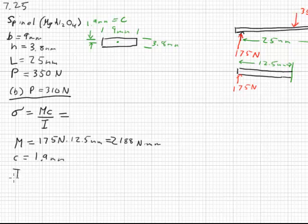We already calculated C, that is 1.9 millimeters. For moment of inertia, it's base times the cube of its height all divided by 12. Base is 9 millimeters, the height is 3.8 millimeters cubed, all of that over 12. We end up with 41.15 millimeters to the fourth.